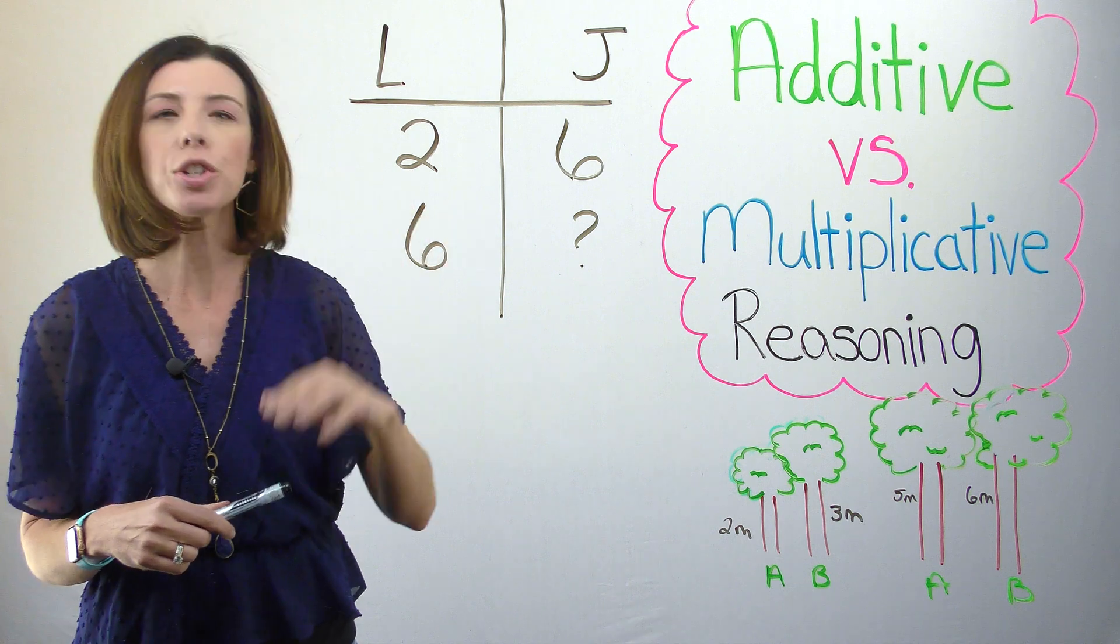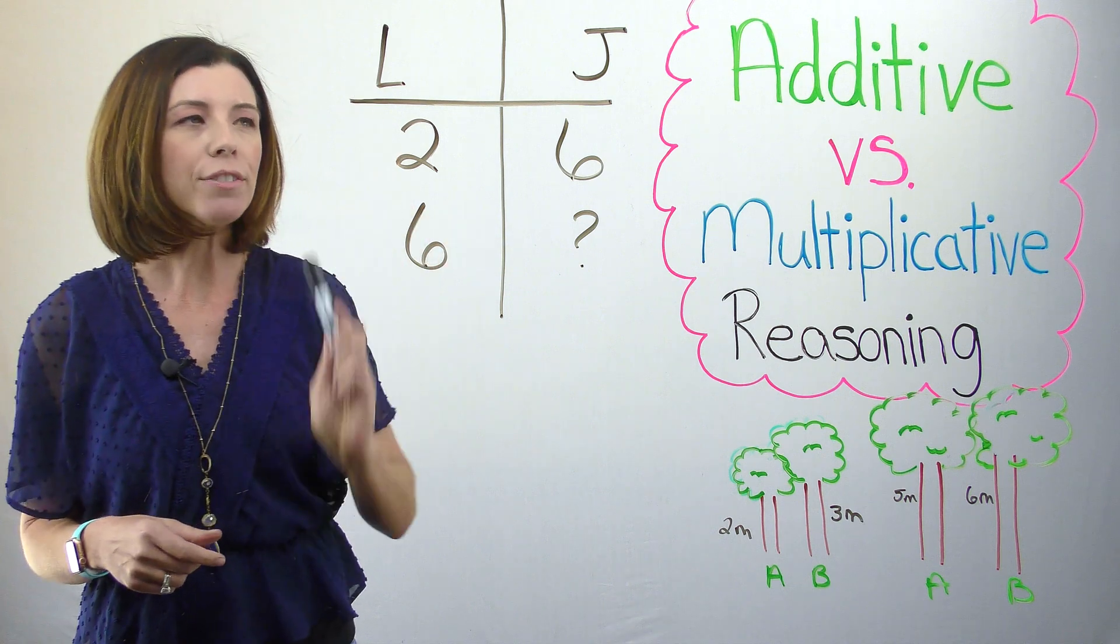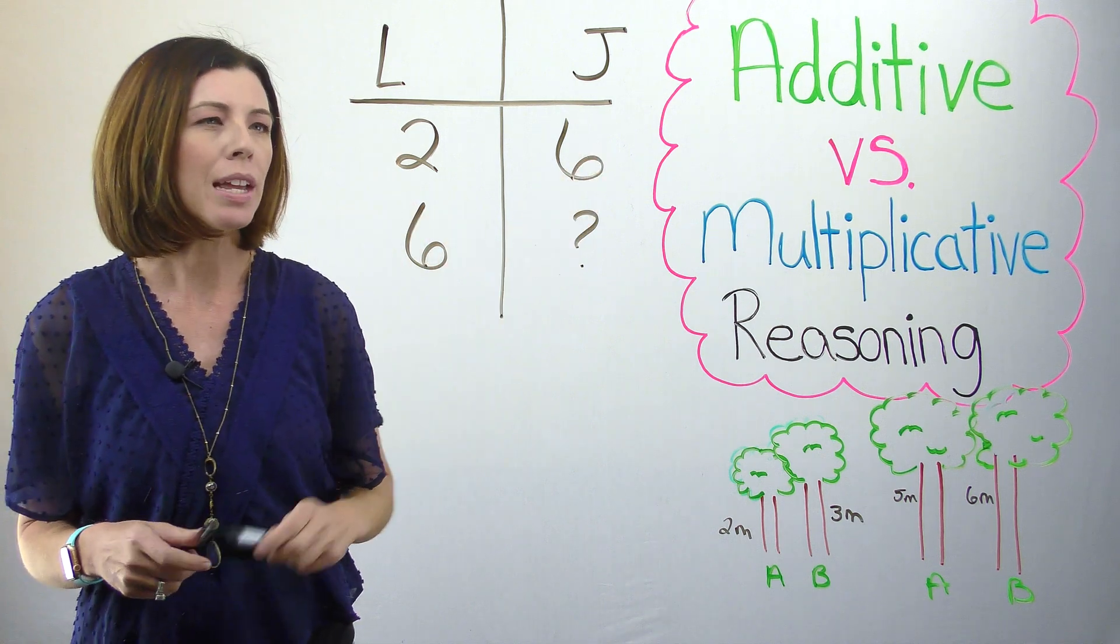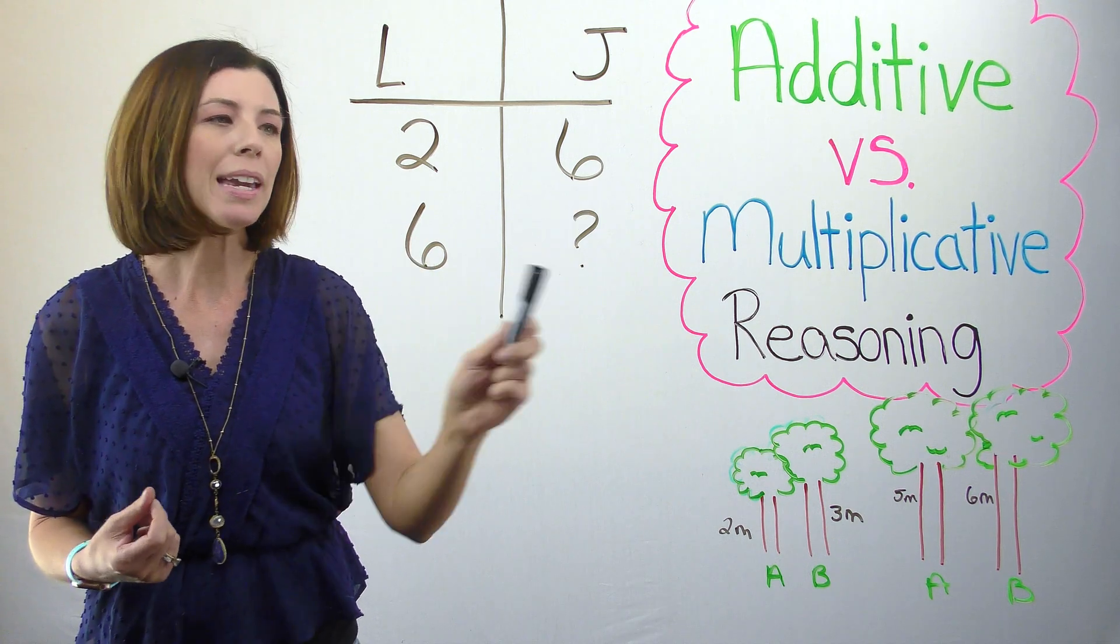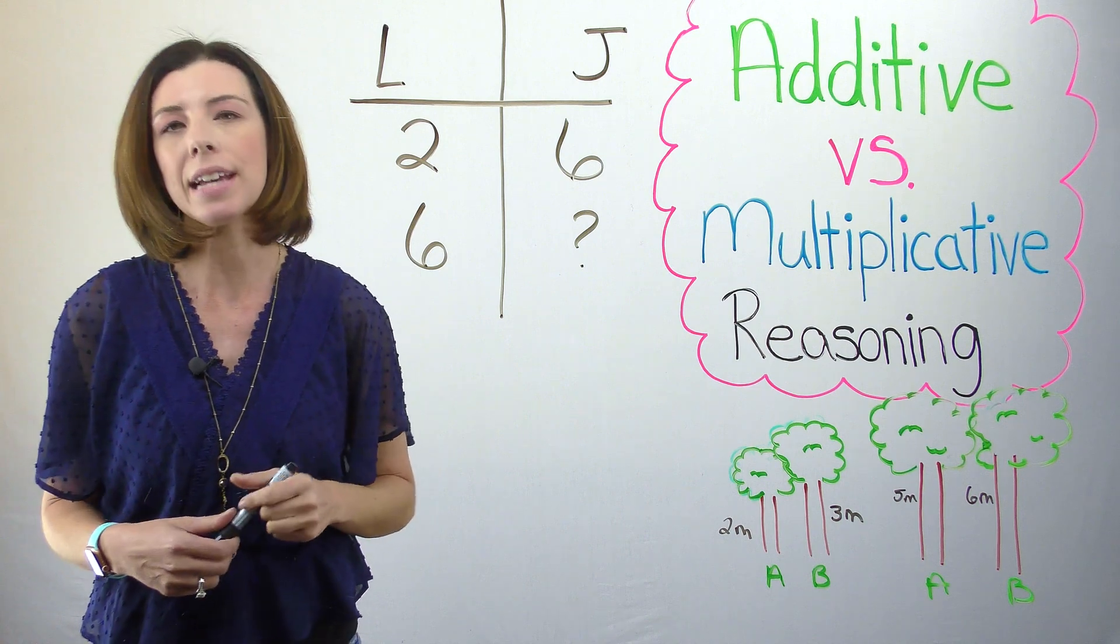I've got a little t-chart to show what's going on here. I've got L for Lisa, J for James, and I see that when Lisa is 2, James is 6, and the question asks me how old will James be when Lisa is 6?